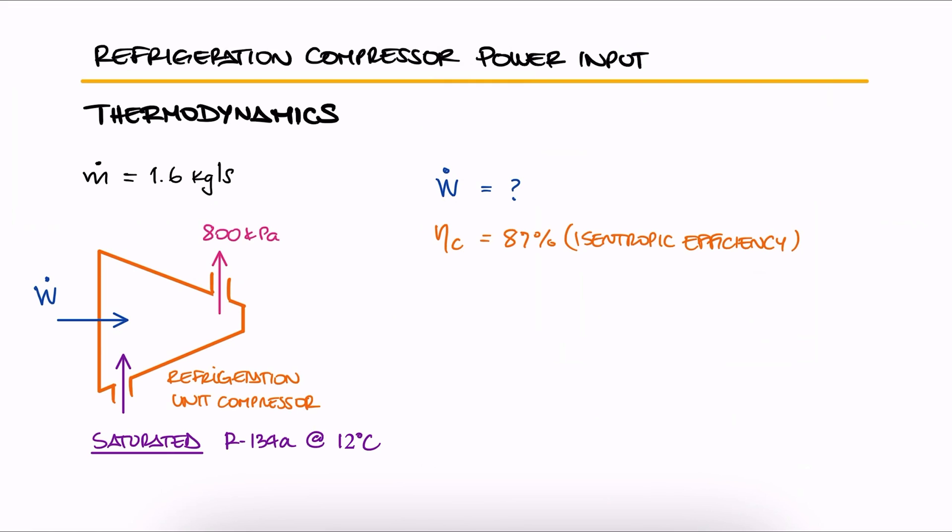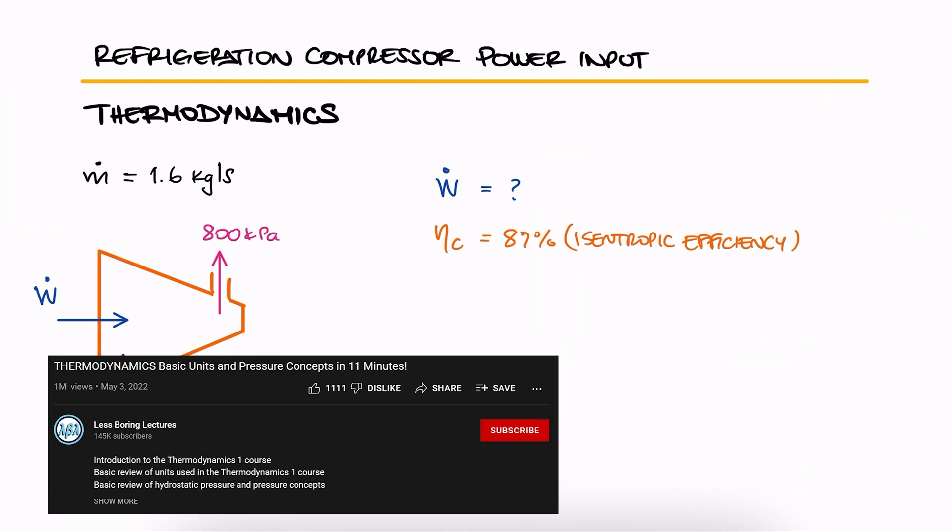This is the second example for the Isentropic Efficiency main lecture. The link to that 8-minute lecture and all the other examples and lectures of the thermodynamics course are found in the description below.